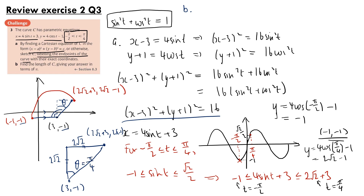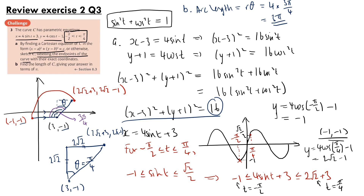Therefore the total angle of the arc is pi over 2 plus pi over 4, which equals 3 pi over 4. Using the arc length formula in radians: arc length equals r times theta. The radius is the square root of 16, which is 4. So arc length equals 4 times 3 pi over 4, which equals 3 pi. That is our final answer. And that is the end of review exercise 2 for Edexcel's Pure Year 2 textbook — I hope you enjoyed it and I'll see you for the next video.